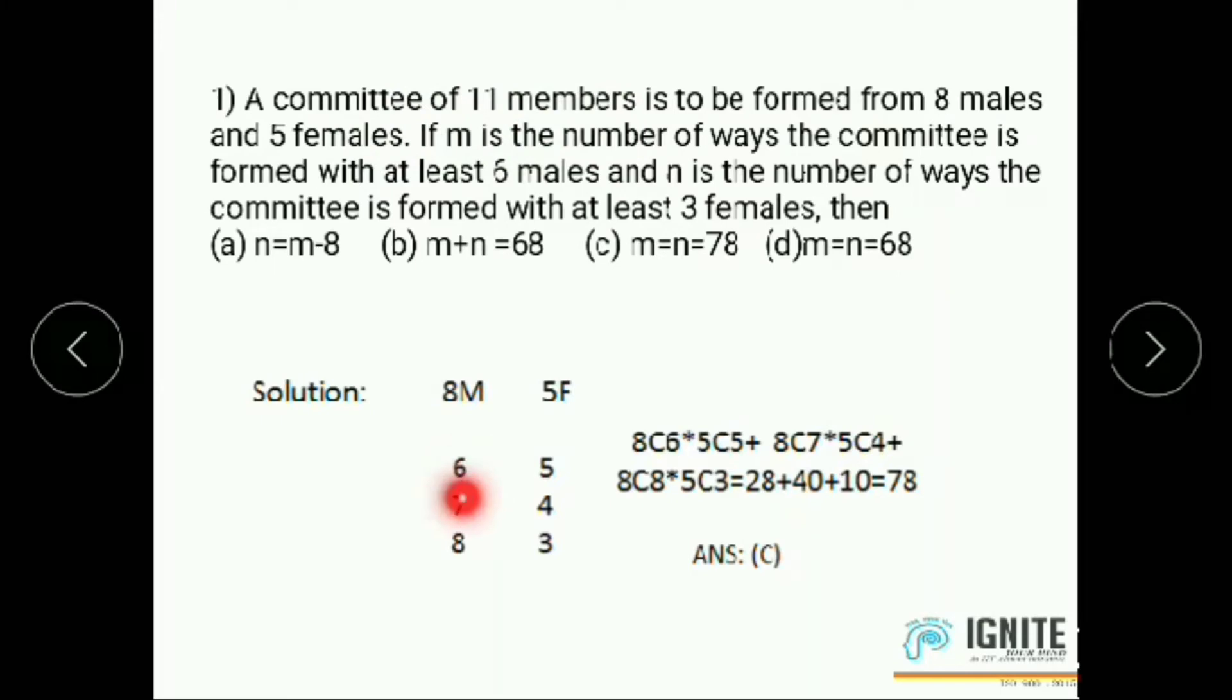So the number of ways the committee is formed with satisfying this 2 condition equals 8C6 and 5C5. This is first combination, or means 8C6 plus 8C7 then 5C4, or 8C8 and 5C3. Then we get final answer 78, option C.